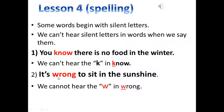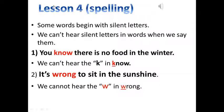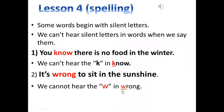Let's move to another part. Unit 7, Spelling, page 63. Some words begin with silent letters. We cannot hear silent letters when we say them. For example: we cannot hear the K in 'know'. It's wrong to sit in the sunshine — we cannot hear the W in 'wrong'.